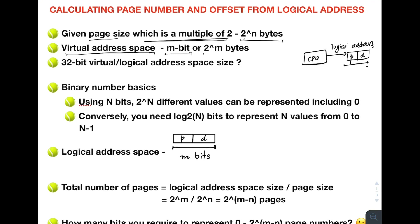The maximum size of the process can be 2^m bytes — this is discussed in a separate video, the link of which will be in the description. Many times you will see '32-bit virtual logical address space' written. So what do we mean by that? When it is given that the virtual or logical address space is 32-bit, what does that mean?